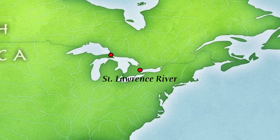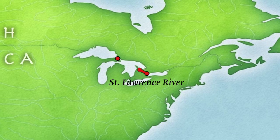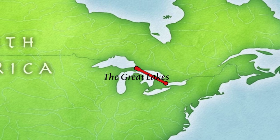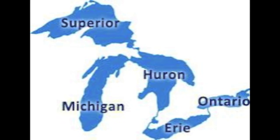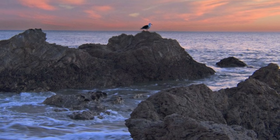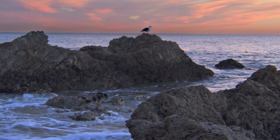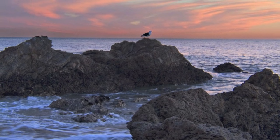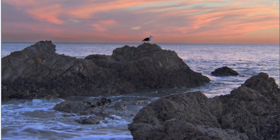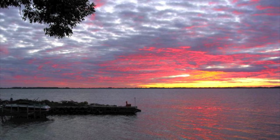The Great Lakes are made up of five lakes: Superior, Michigan, Huron, Erie, and Ontario. They are located in the northern part of the United States and southern Canada. They are the largest freshwater lakes in the world.